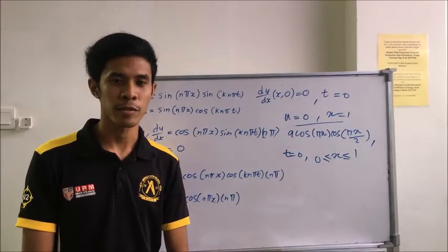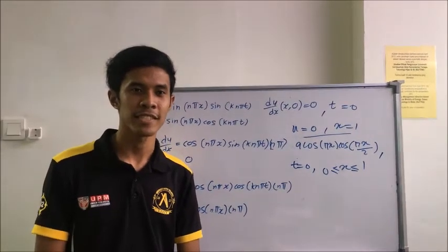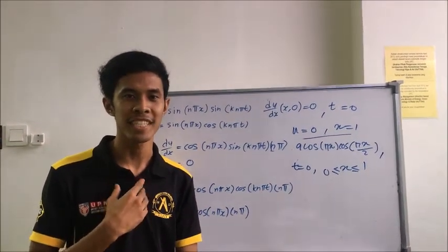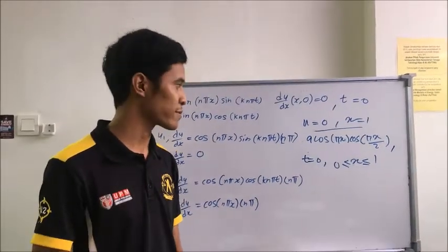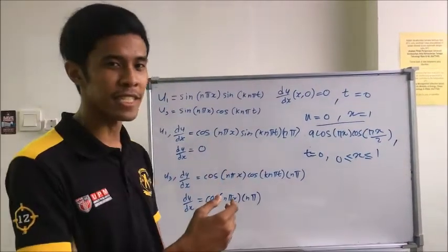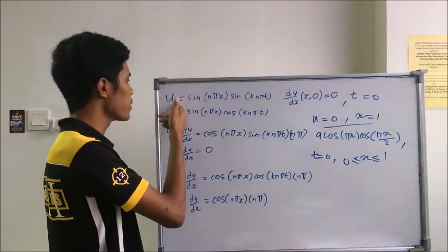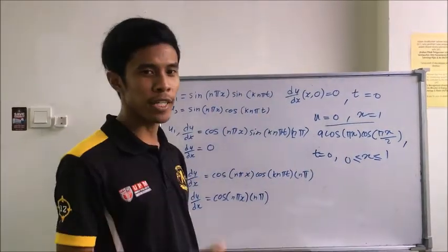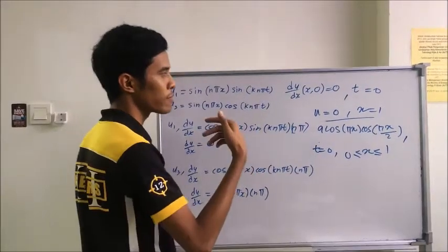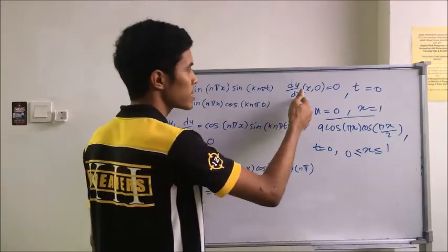Assalamualaikum warahmatullahi wabarakatuh and good morning. My name is Amir Abiy Mandini and my metric number is 192305. From the previous explanation from Aziz, we get the equations u1 and u3 for lambda. So next, I will explain the following condition, which is this.